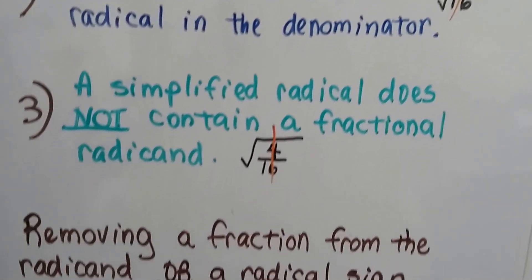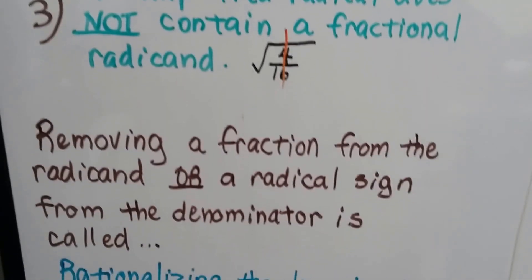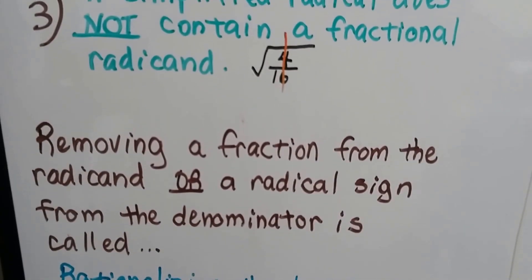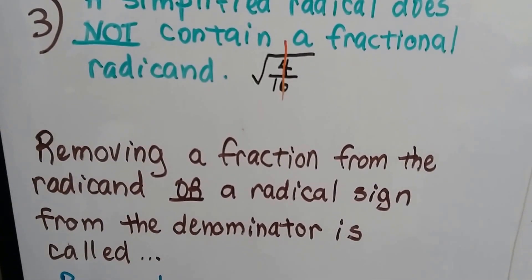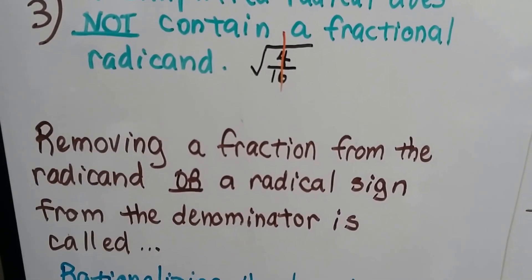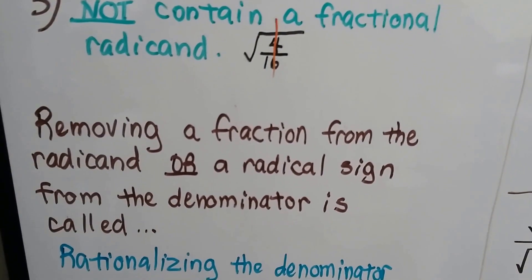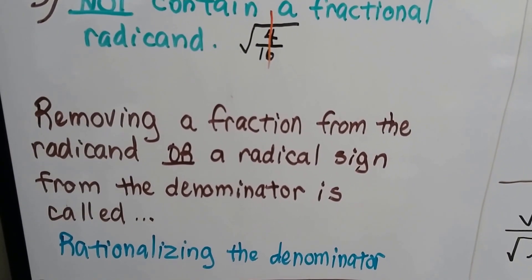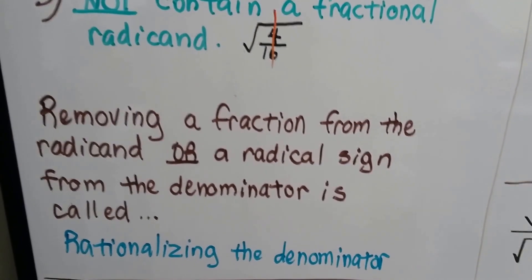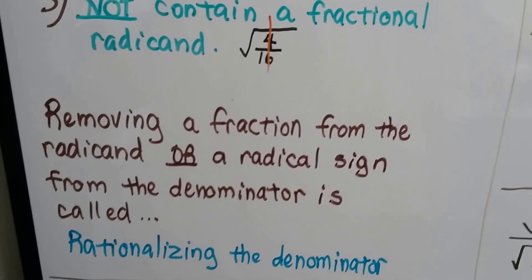That's not simplified. Removing a fraction from the radicand or a radical sign from the denominator is called Rationalizing the Denominator.